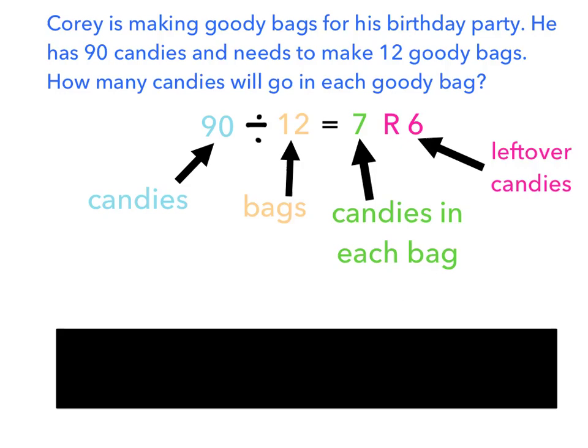So I've laid out the equation here. 90 divided by 12 equals 7, remainder 6. In this case, the 90 represents the 90 candies that Corey has. The 12 represents the number of goody bags. The 7 represents the number of candies in each bag. So he has 90 candies, he's putting them into 12 bags, and so far he can put 7 in each bag.